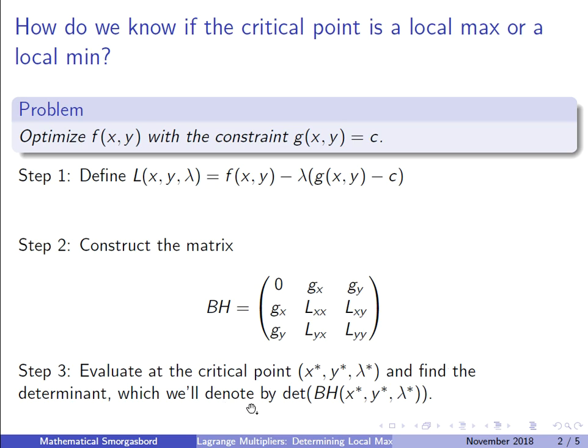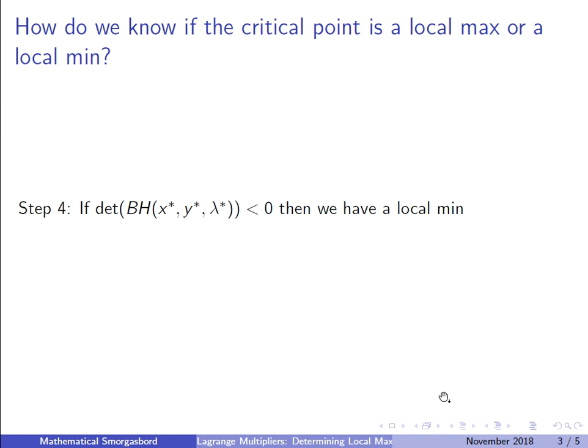And then we find the determinant of this matrix once we've got it as an actual matrix of values, a constant. So we're going to call this the determinant of BH, bordered Hessian, and that's evaluated at the critical point.